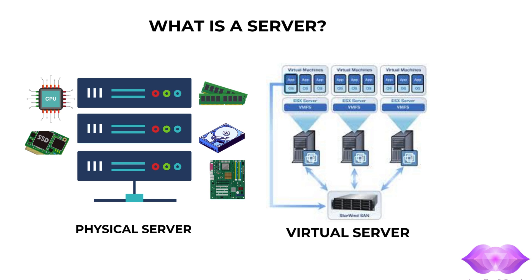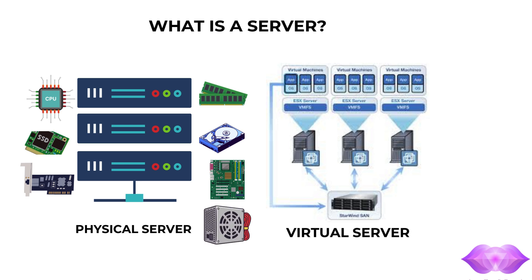The motherboard is the central circuit board connecting all components, including slots for CPUs, memory, storage devices, and network cards. The network interface card — NIC — enables communication between the server and other devices over a network; server-grade NIC cards are typically 10 Gbps, 100 Gbps, or even more. The power supply unit converts electricity from an outlet into usable power for server components, designed for reliability and redundancy. Cooling systems include fans, heat sinks, or liquid cooling to maintain optimal temperatures.